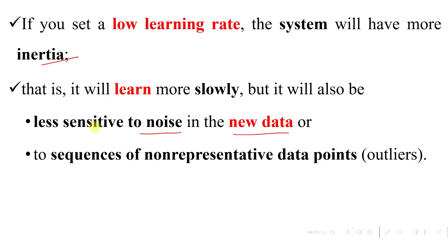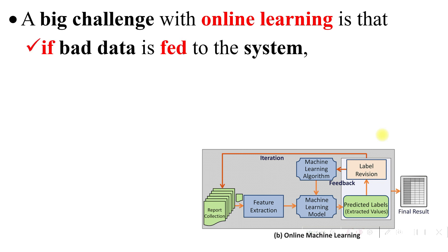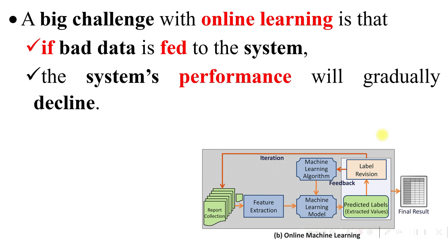A sequence of non-representative data points is simply called outliers. A big challenge with online learning systems is that if bad data is fed to the system, the system's performance will gradually decline.